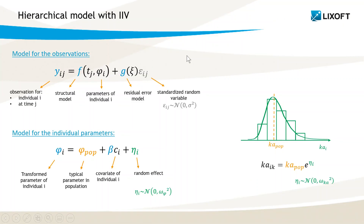In a standard mixed effects model, the observation model is composed of the prediction that depends on individual parameters phi_i and a residual error that comes from the standard random variable epsilon. Each individual parameter is defined with its own model that predicts how much the value for each individual i deviates from the typical parameter value in the population phi_pop. The inter-individual variability can be described by covariate effects and the unexplained variability is represented by the random effect with a normal variable eta. So two levels of variability are combined: the residual error and the inter-individual variability.